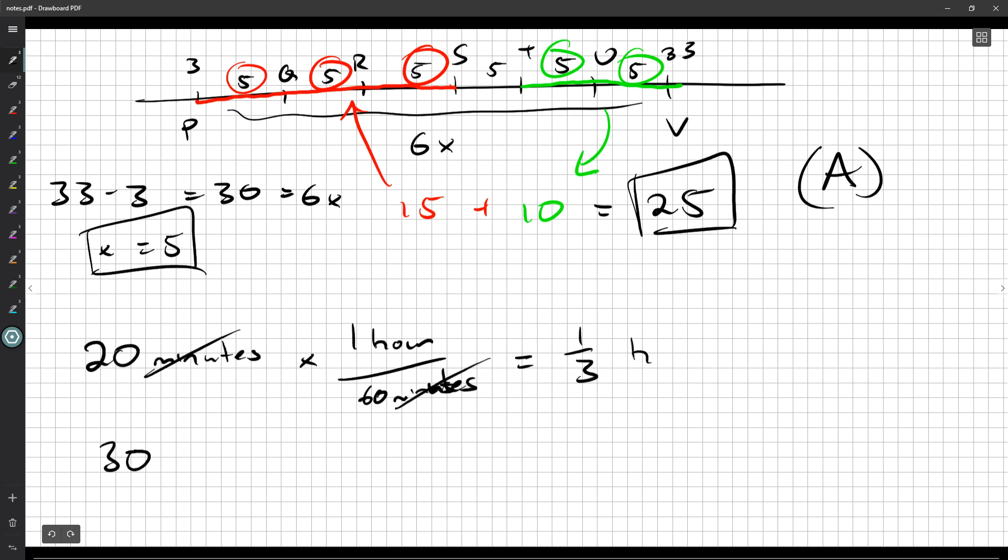Now, the speed is 30 kilometers per hour. We know how long he's going at that speed - a third of an hour. Hours cancel out, we're left with kilometers. 30 times a third: 30 divided by 3 is 10.